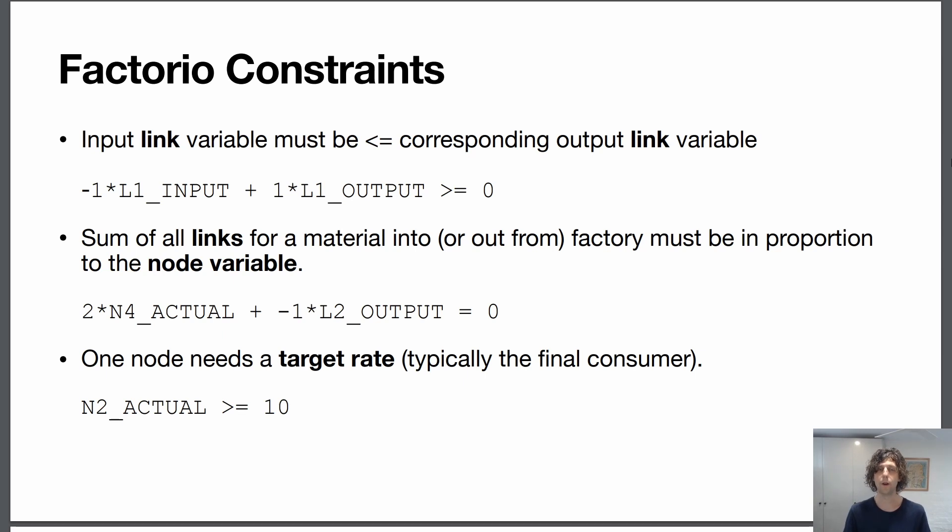And then finally one node needs a target rate, which is typically the final consumer, to say what we're trying to optimize for. So in this case our n2_actual, which is our science, needs to be greater than or equal to 10.